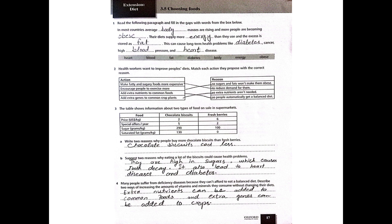Question number 2: Health workers want to improve people's diet. Match each action they propose with the correct reason. The actions are: make fatty and sugary foods more expensive; encourage people to exercise more; add extra nutrients to common food; and add extra genes to common crop plants.